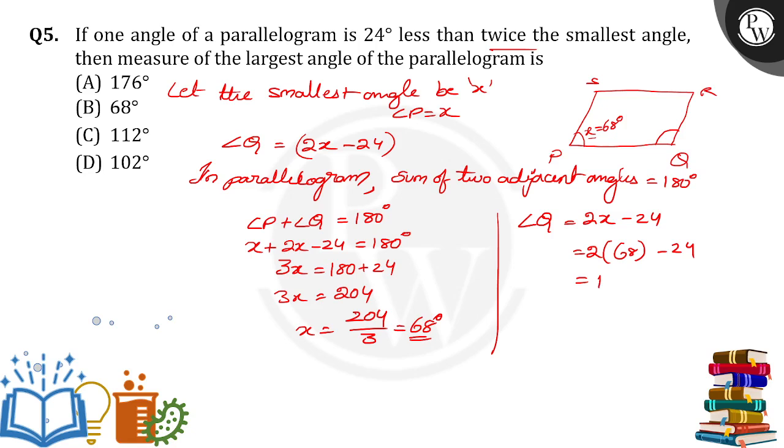2 times 68 is 136 minus 24, so 136 minus 24 we will get angle Q is equal to 112 degrees. So the largest angle of the parallelogram is 112 degrees, option C is the right answer, thank you!